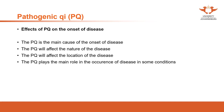The last aspect is that sometimes the pathogenic qi plays the main role in the occurrence of disease in some conditions. This refers to situations where the antipathogenic qi doesn't matter as much — in some conditions the pathogenic qi plays the main role in the occurrence. The previous three effects involve the struggle between antipathogenic qi and pathogenic qi, but in this last aspect the pathogenic qi dominates in some conditions.